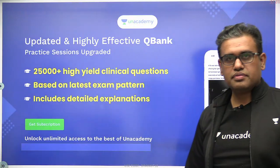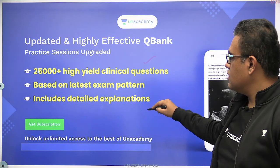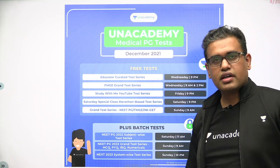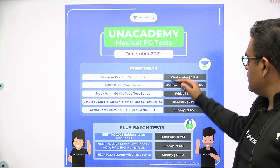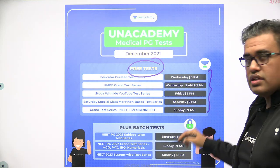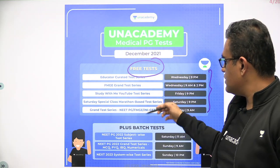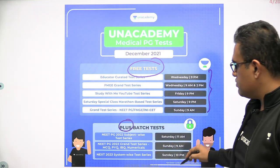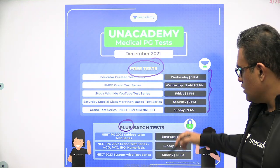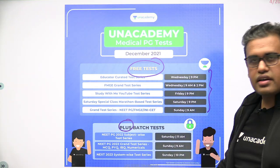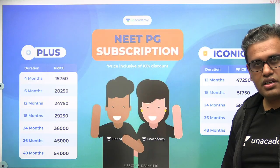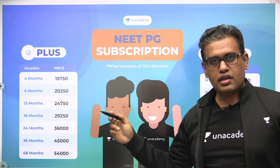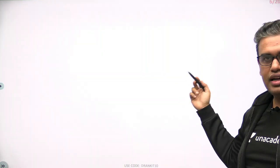A few benefits of the plus subscription you can see here. This is the QBank with 25,000 MCQs with well-detailed explanations. Here are all the tests conducted on a weekly basis. Free tests run from Wednesdays to Sundays including the test series, YouTube test series, and marathon grand tests. Plus students get extra tests on Saturdays and Sundays for subject-wise and grand test practice. You can subscribe to either the Plus or Iconic plan. Let's start the topic.